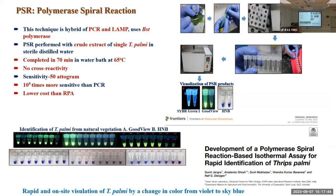RPA is a patented technology and highly costly, so we were looking for alternative technologies to make detection cheaper. We came across another technology: the Polymerase Spiral Reaction (PSR)-based assay. The PSR assay is a hybrid of both PCR and LAMP assay.